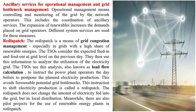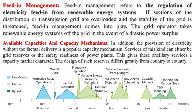Smart Grid Technologies: A smart grid uses digital technology for two-way communication between the utility and its customers, and sensing along the transmission lines. It includes controls, computers, automation, and new technologies and equipment working together to respond digitally to our quickly changing electric demand.